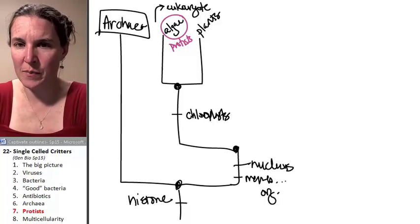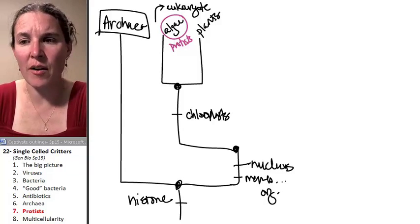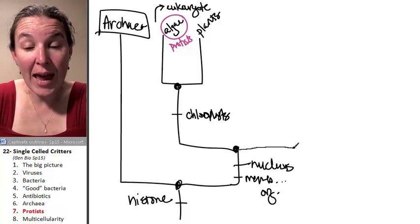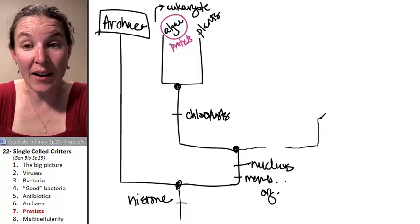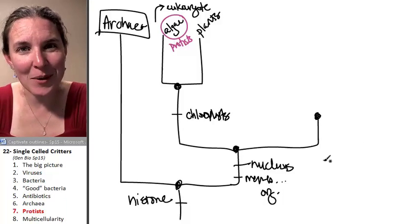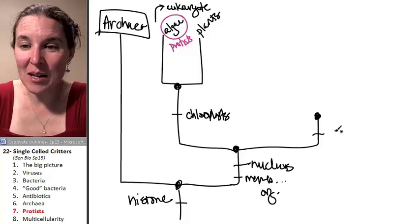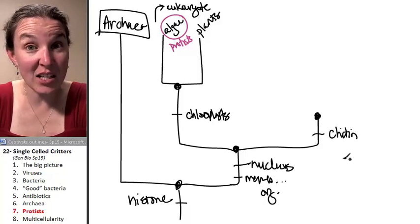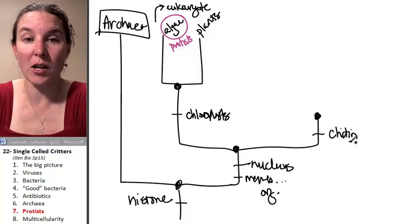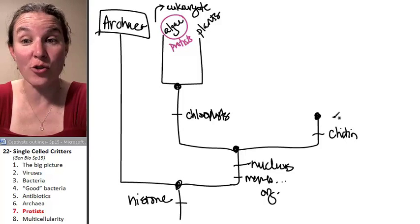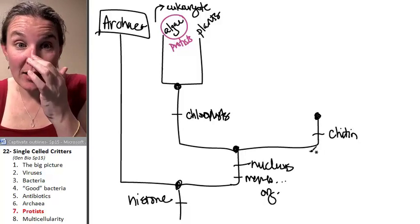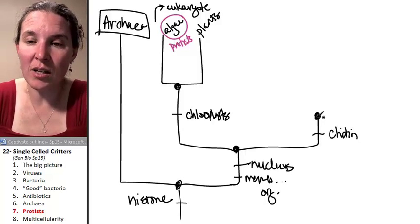Well, who's left to branch off? We've got to branch off both animals and fungi. And guess what they have in common? They have a substance called chitin. This is basically related to glucose. It's basically a glucose molecule with a few additional nitrogens. Everybody beyond this point have chitin.